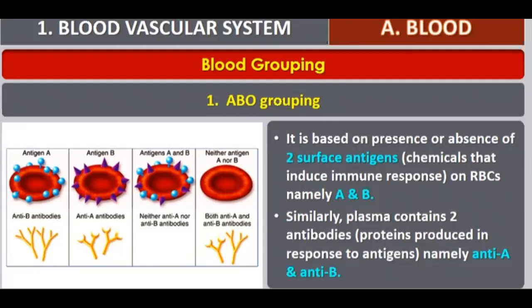In blood group A, anti-B antibody is present, and in blood group B, anti-A antibody is present. In blood group AB, there are no antibodies present. In blood group O, both anti-A and anti-B antibodies are present within the plasma.